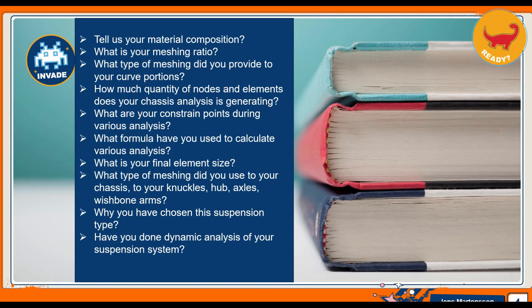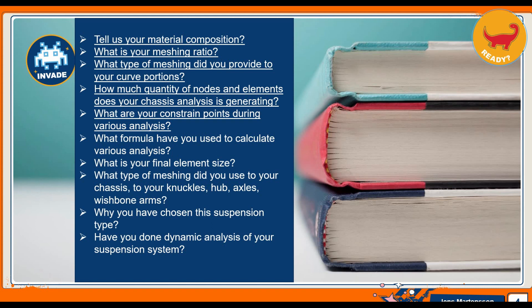11. Tell us your material composition. 12. What is your meshing ratio? 13. What type of meshing did you provide to your curved portions? 14. How many nodes and elements does your chassis analysis generate? 15. What are your constraint points during various analyses? 16. What formula have you used to calculate various analyses?